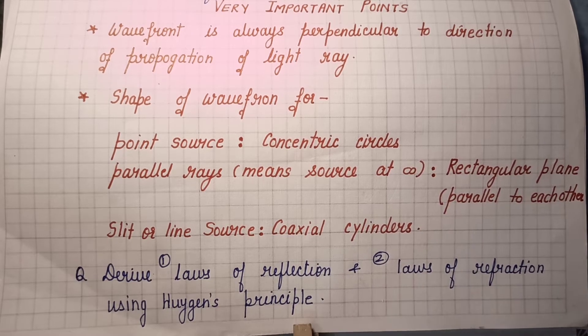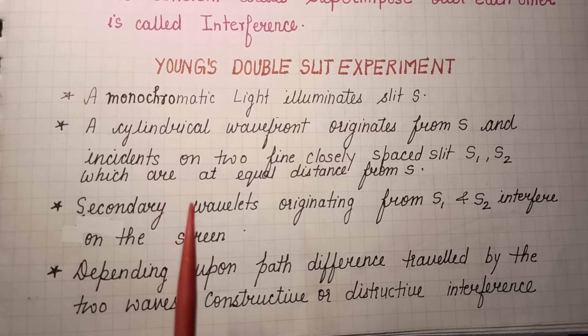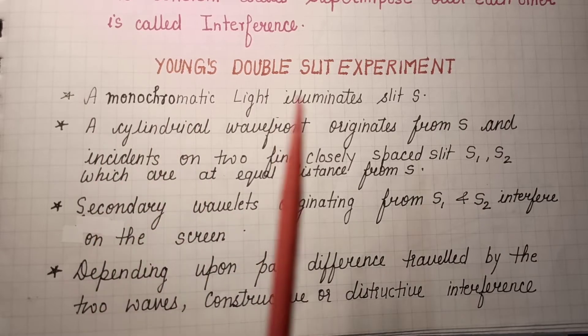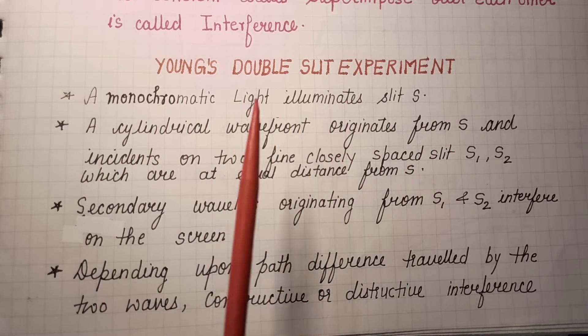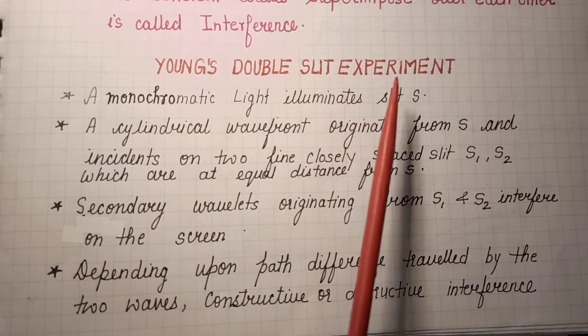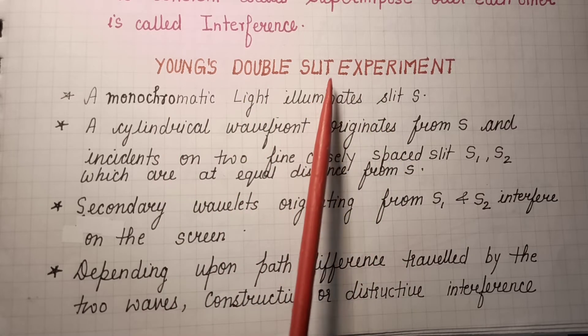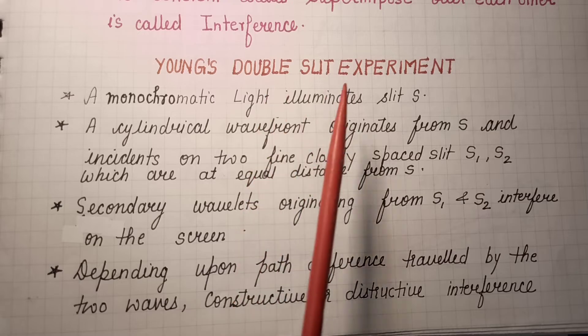There are two important derivations, one from interference and one from diffraction. For interference, it's related with Young's double slit experiment and the derivation is expression of width of fringe interference fringes.